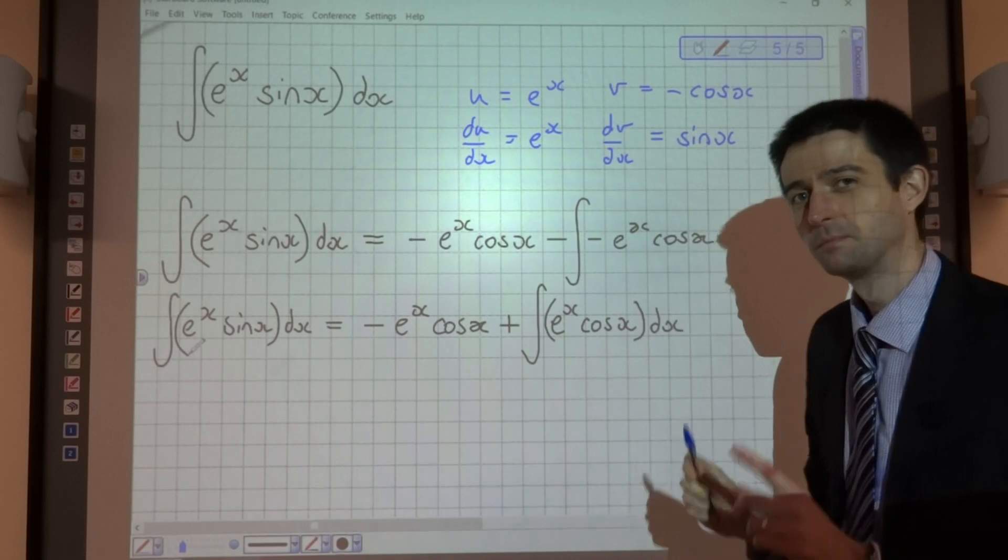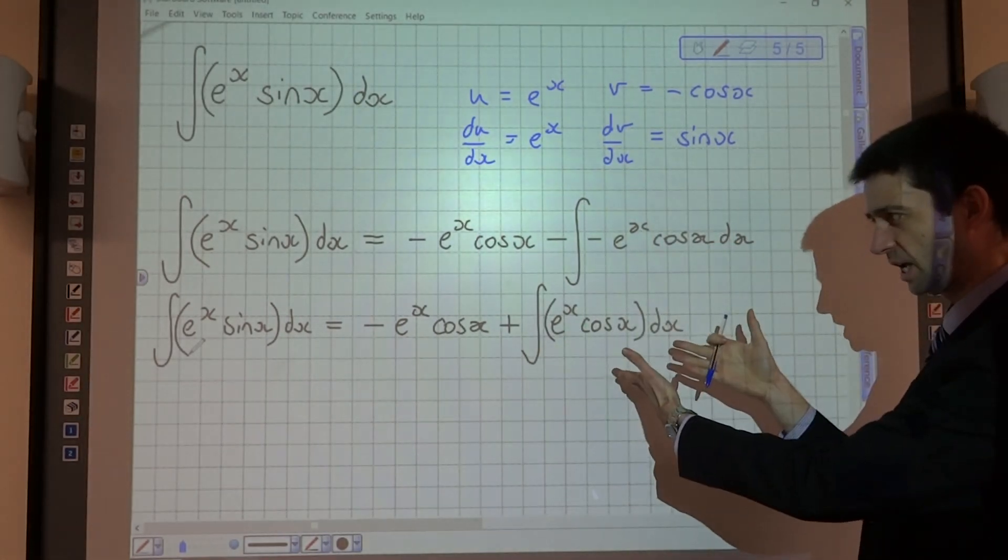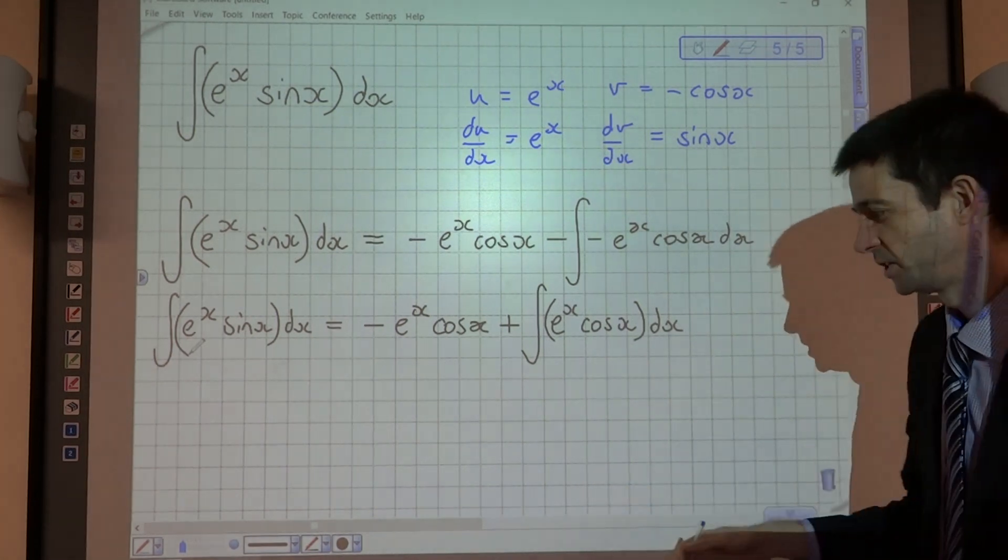So I'm going to keep writing that here. You'll see why. So we've got something that looks very similar, e to the x cos x. So we're going to integrate by parts again.